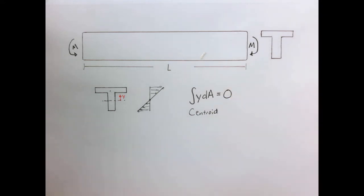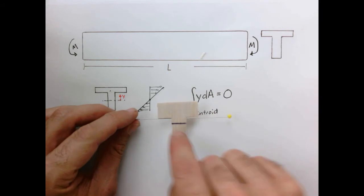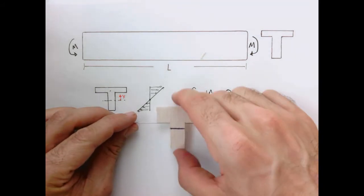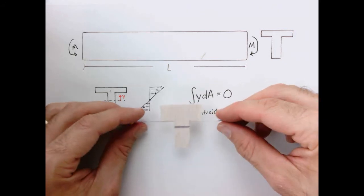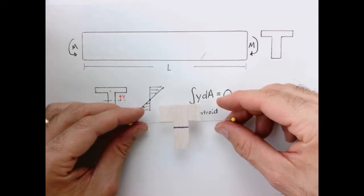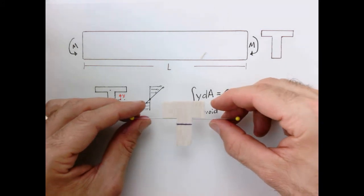And intuitively the way we would think about it is it's the point where we can perfectly balance this thing in the y direction. So here I have a little simple model. So I have my T shape. This line right here is where the center of this area is, but the centroid is around where I've put these pins. And I can see the area, I can see that that's the centroid because that's the point where I can easily balance this thing on these two pins.